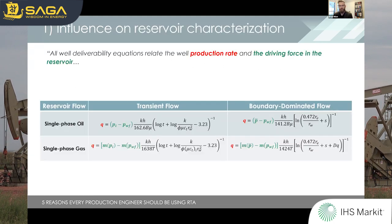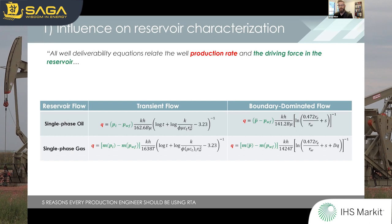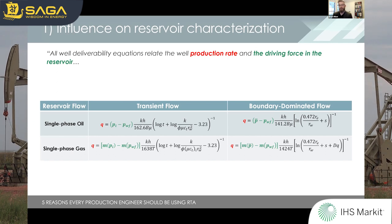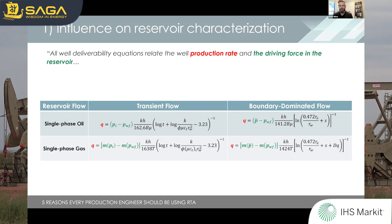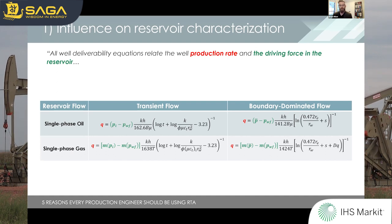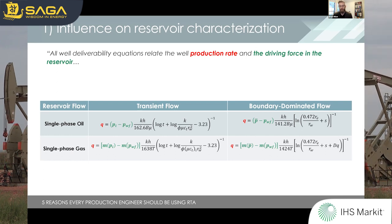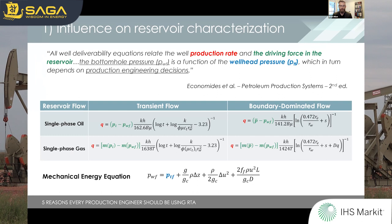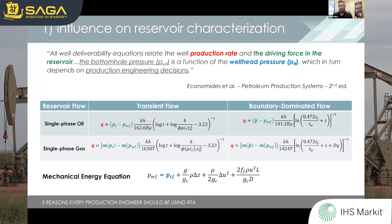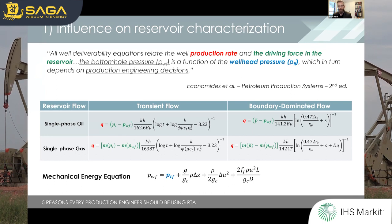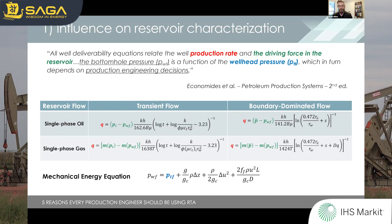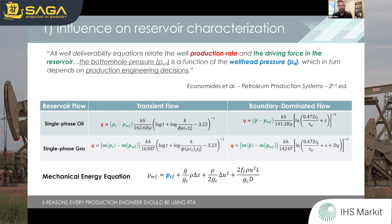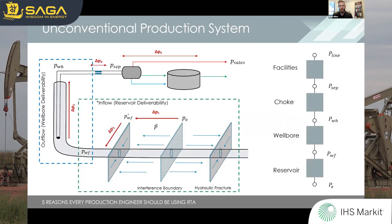To start, I wanted to take a quote from the production text I recommend, 'Drilling Production Systems' by Economides, which says that all well deliverability equations relate the well production rate and the driving force in the reservoir. The quote establishes the link that production engineering has on these equations and reservoir performance: the bottom hole pressure is a function of wellhead pressure, which in turn depends on production engineering decisions.